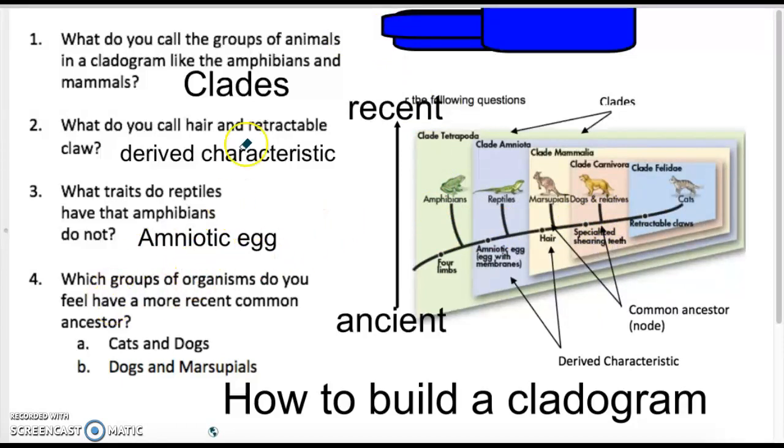If you were to ask the fourth question, which group of organisms do you feel has the most recent common ancestor? When we say recent, we want to be in a spot where it's closer up the arrow.